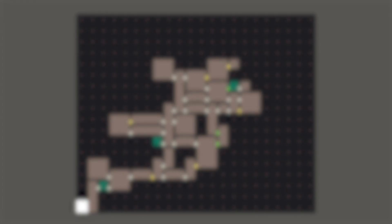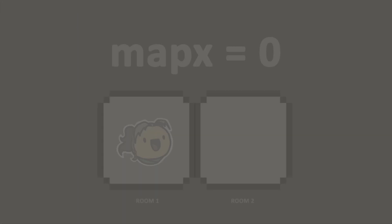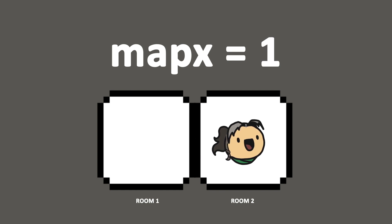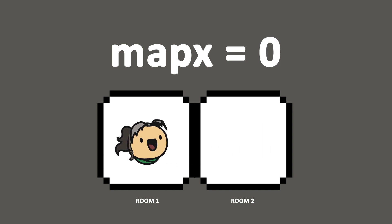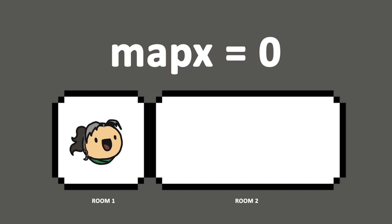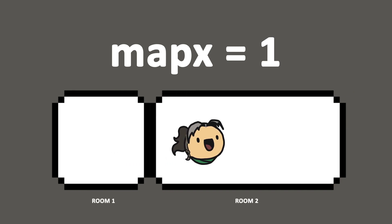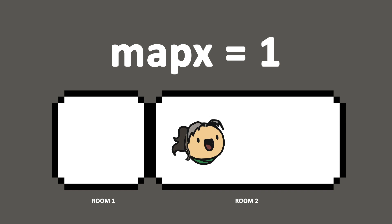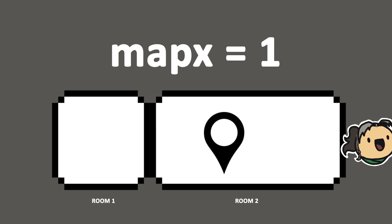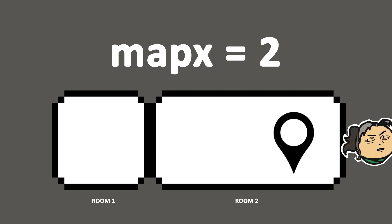How do we get mapX and mapY to equal our position? I started by telling mapX to simply plus 1 every time we went through a door to the right, and subtract 1 every time we went through a door to the left. This works, but only until we get to rooms that take up more than one cell, because we're only updating mapX when we go through doors. There's no way to depict the player's position in rooms that take up more than one cell.